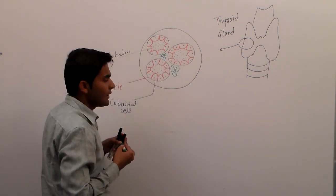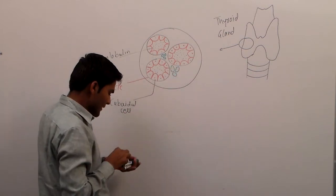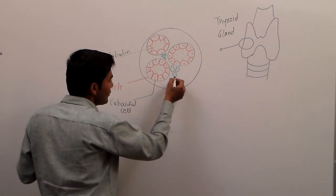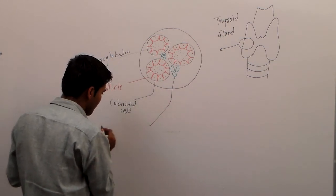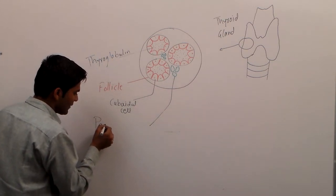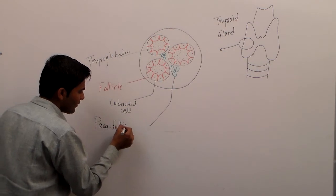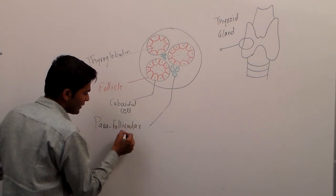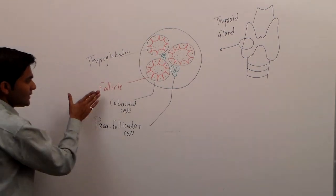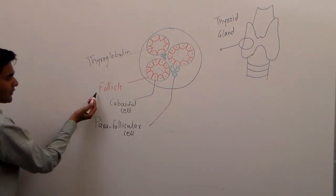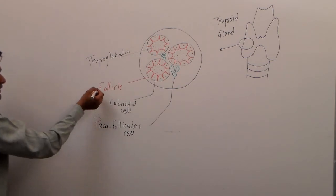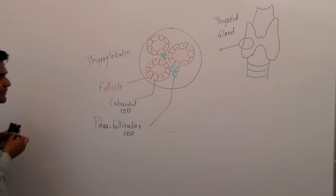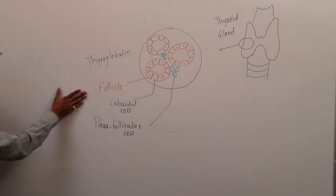Here, around the follicular cells, some cells are present known as parafollicular. These follicular cells, these follicles have follicular cells that are made up of cuboidal cells. Then it will secrete two hormones, T3 and T4, and the parafollicular secrete one hormone that is calcitonin.